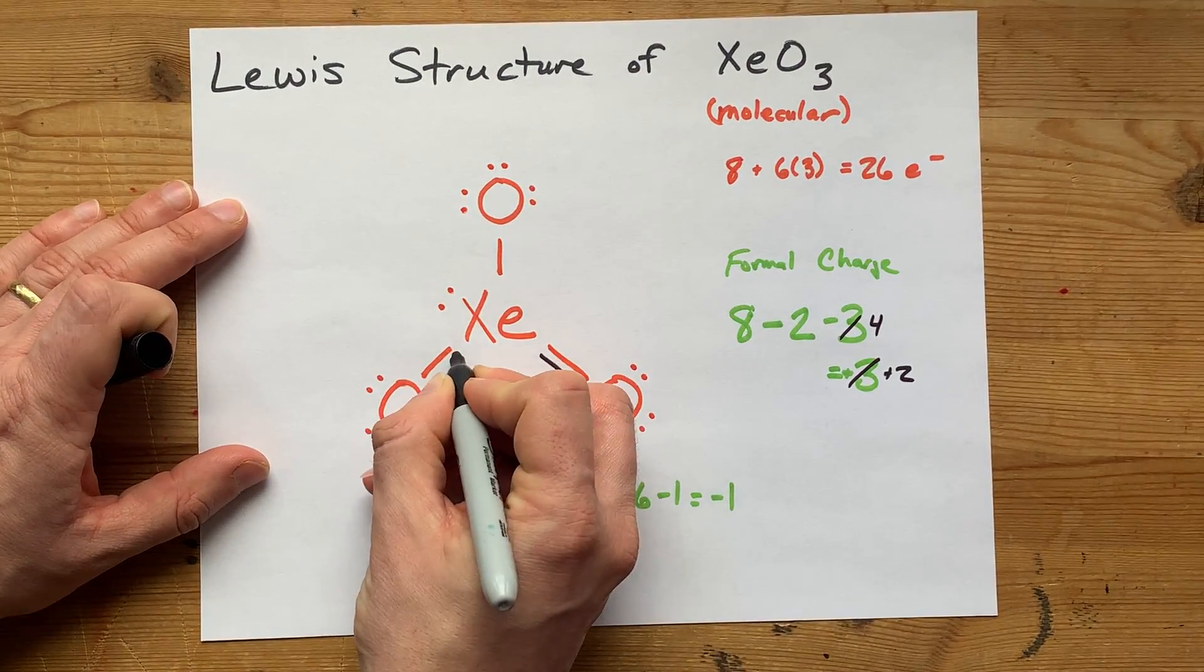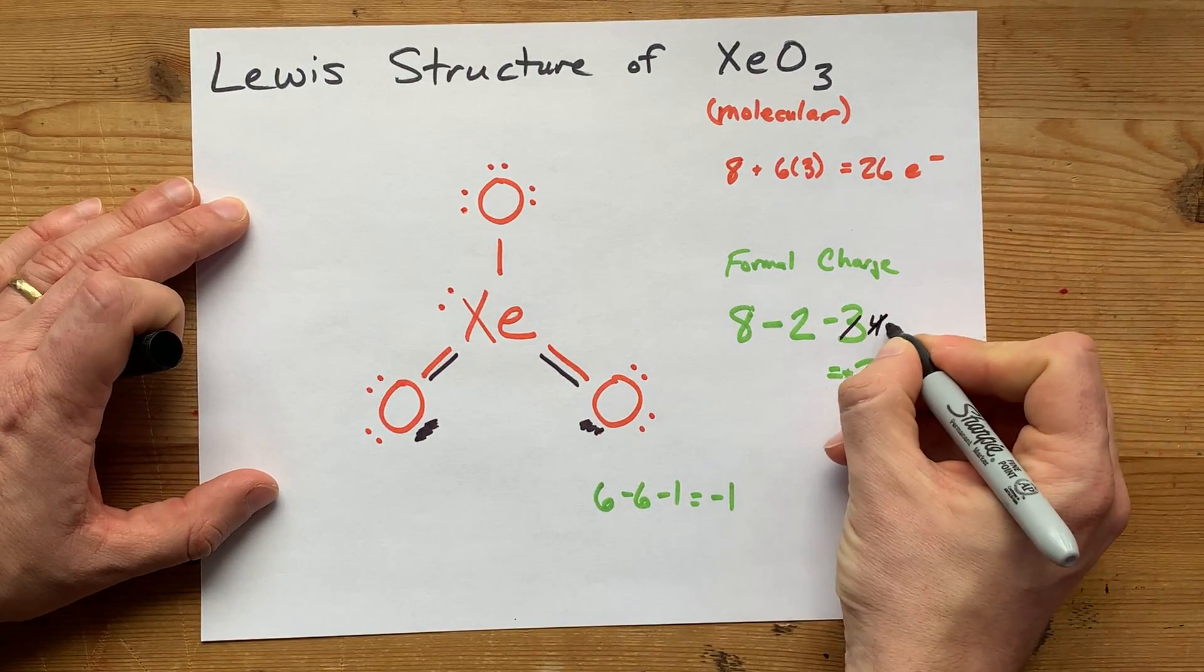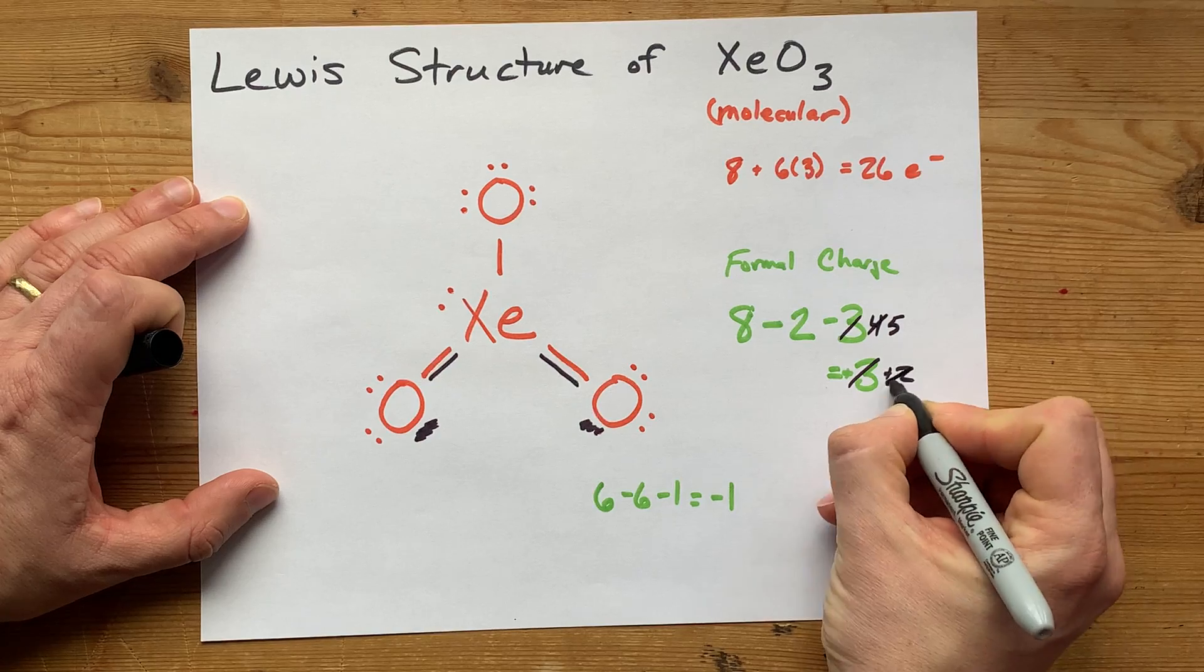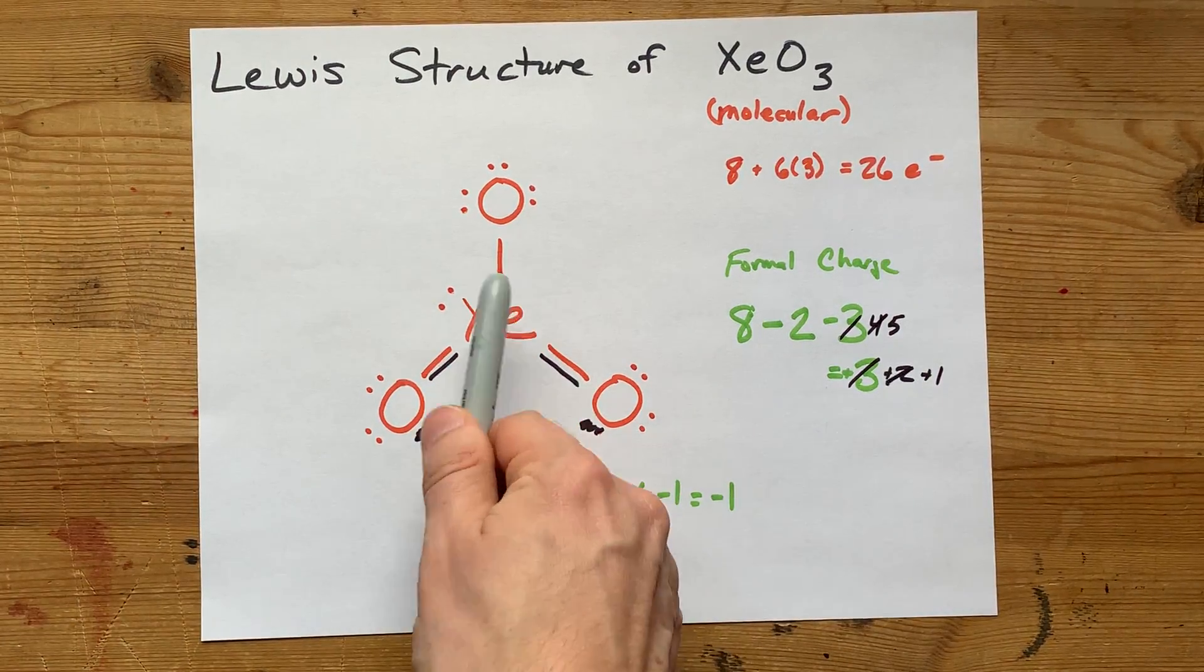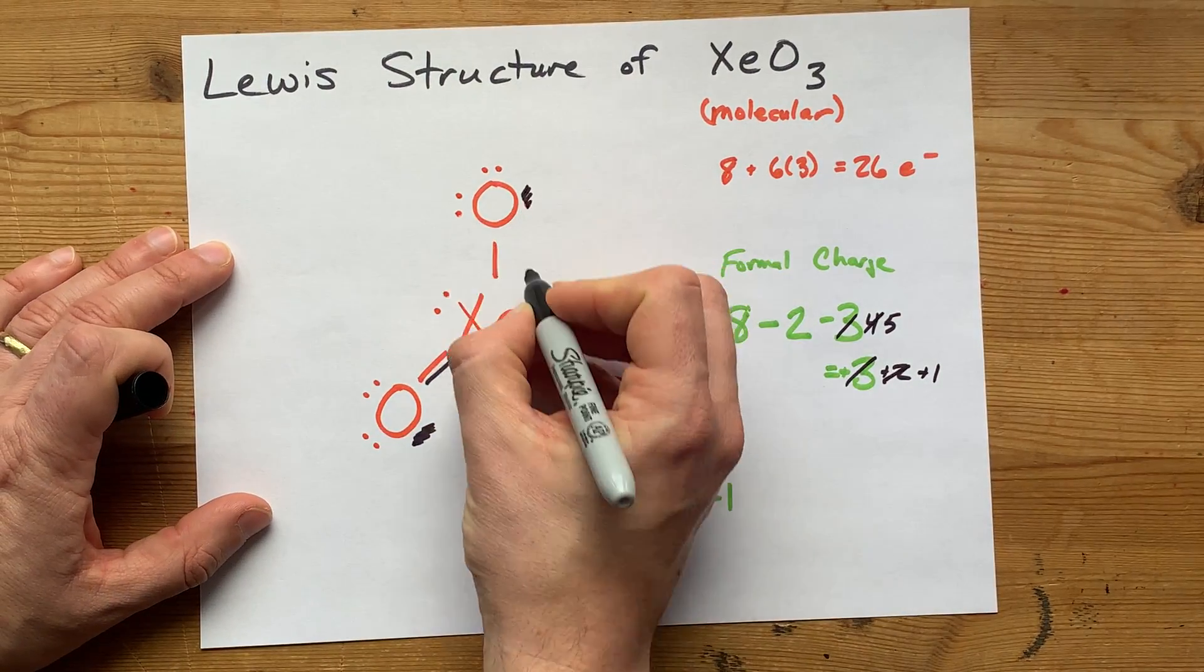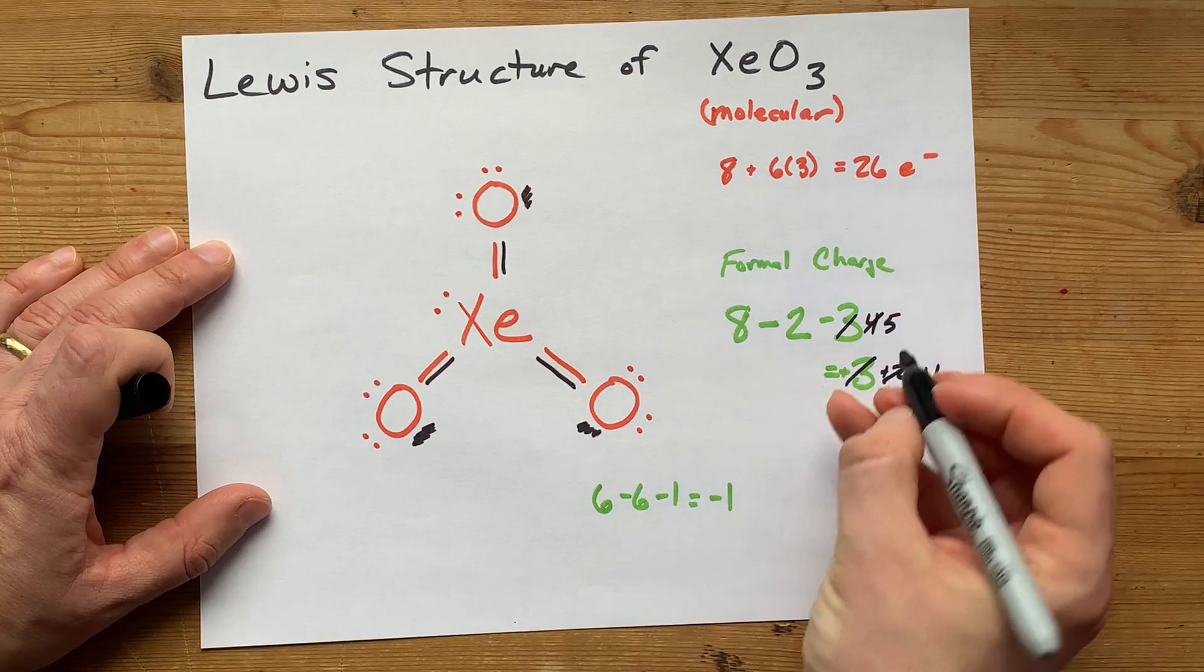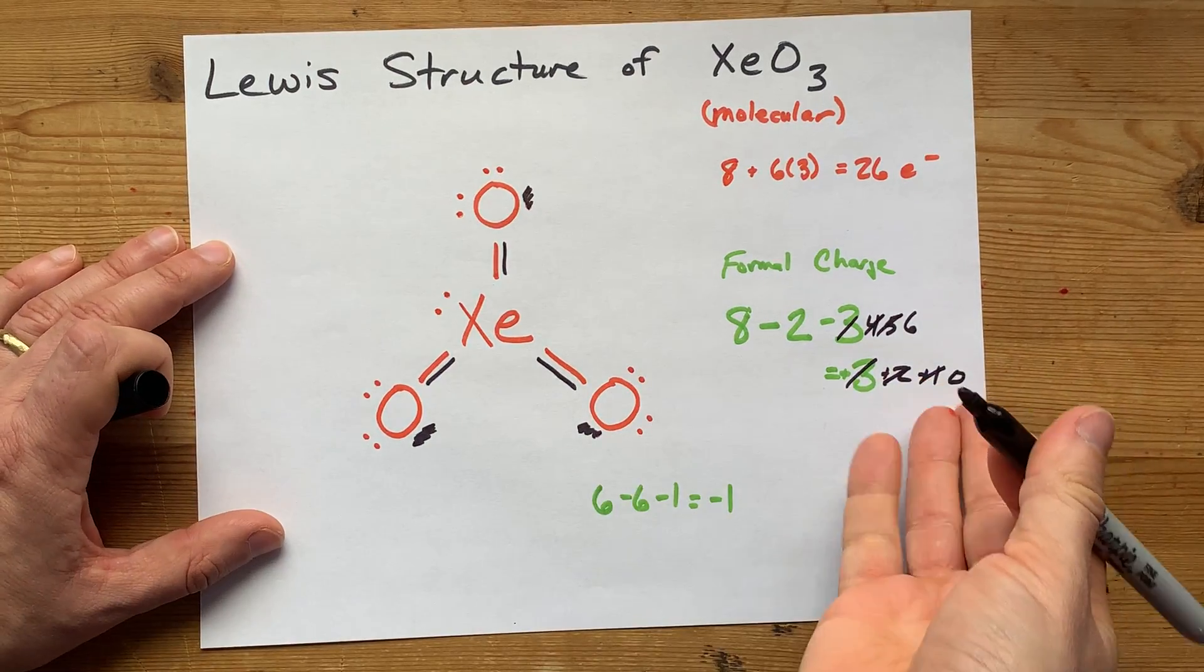So let's move that here. It now has a formal charge of 0, and we added a line to the xenon. That xenon has a formal charge of plus 1. Again, positive formal charge here, negative formal charge there is an invitation to move it into a double bond. That's another bond, and it alleviates the formal charge to 0.